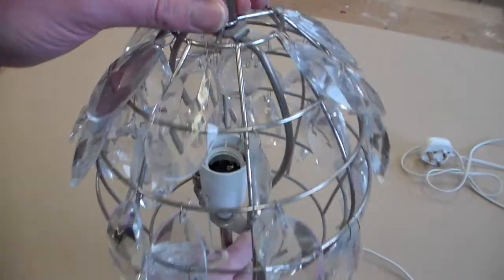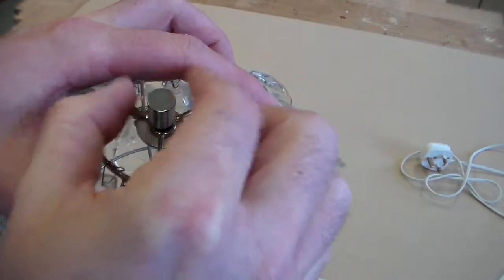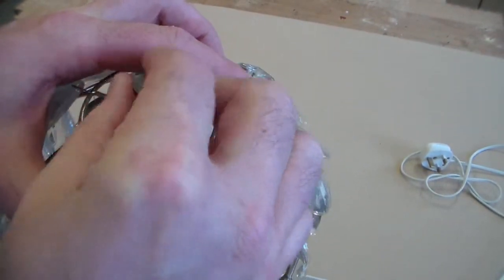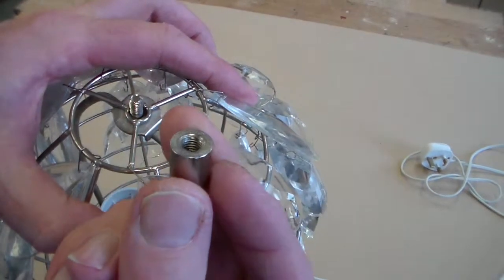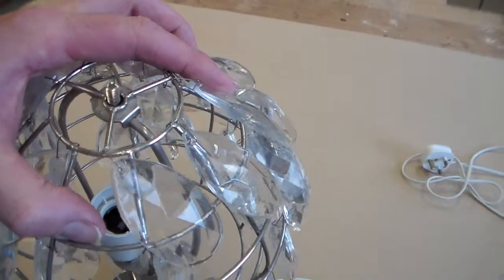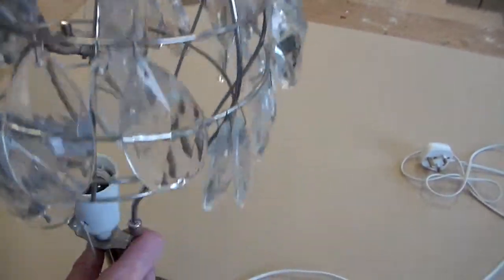If we look on top here we can see there is a small threaded component which if we undo inside it's held with an M6 thread. You can see the internal thread in there that then locates the lampshade on top.